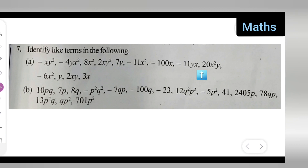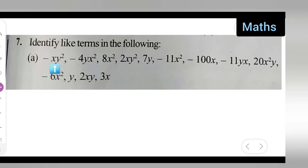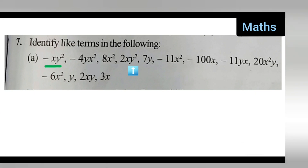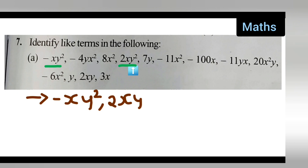You'll have to identify the like terms. So let me do it right over here. What are the like terms here? First, write down minus xy². Now which is the xy² term here? The xy² term is right over here. So first you are having this along with this. Write down the like terms: first it is minus xy², comma, 2xy².